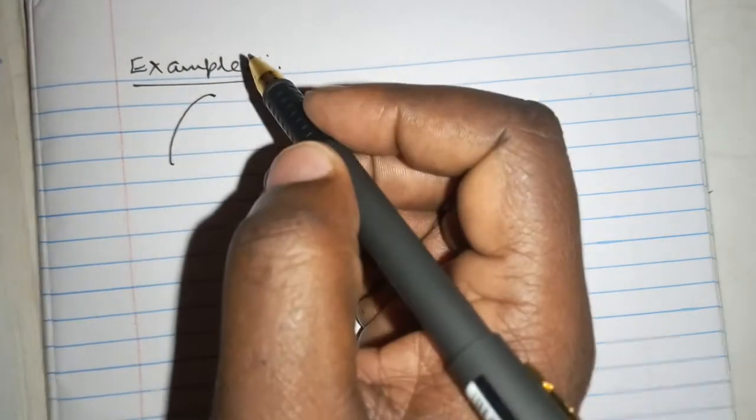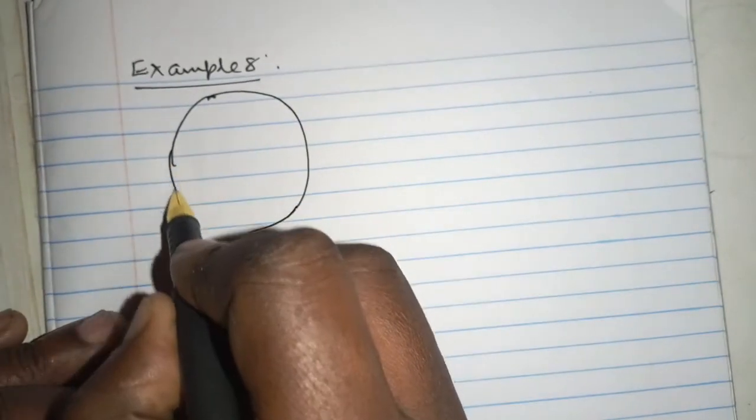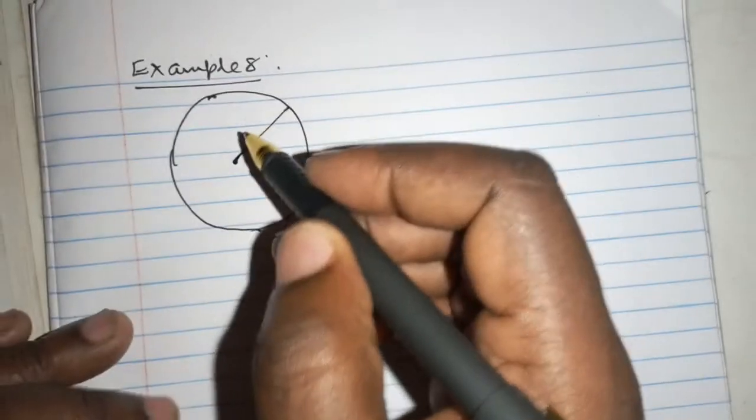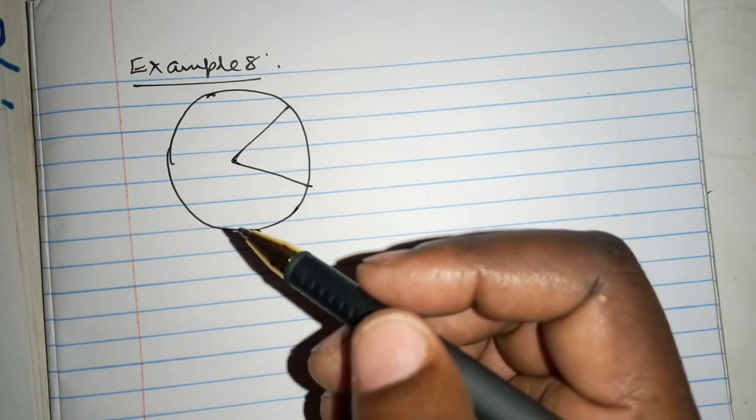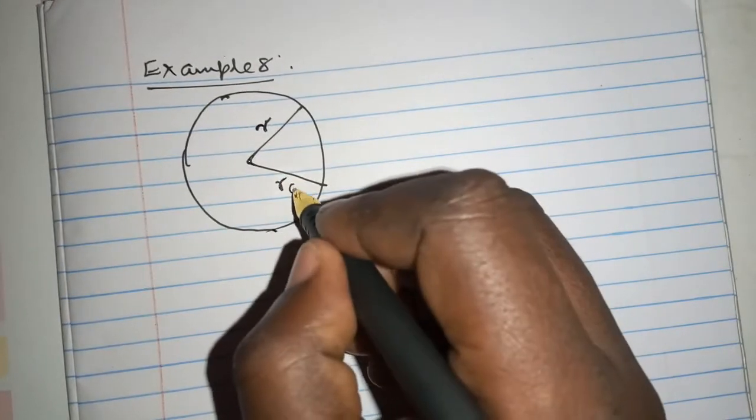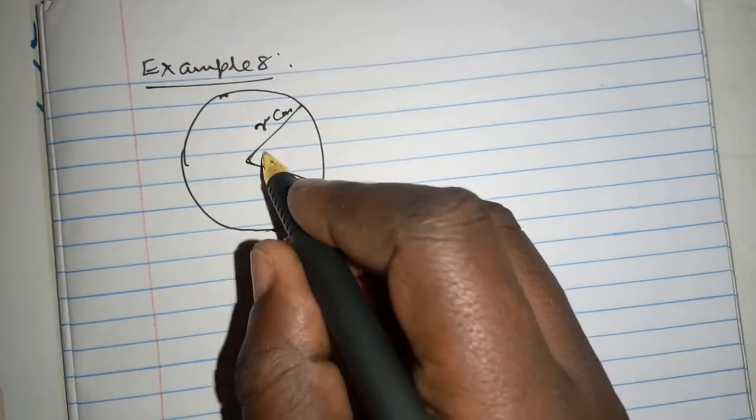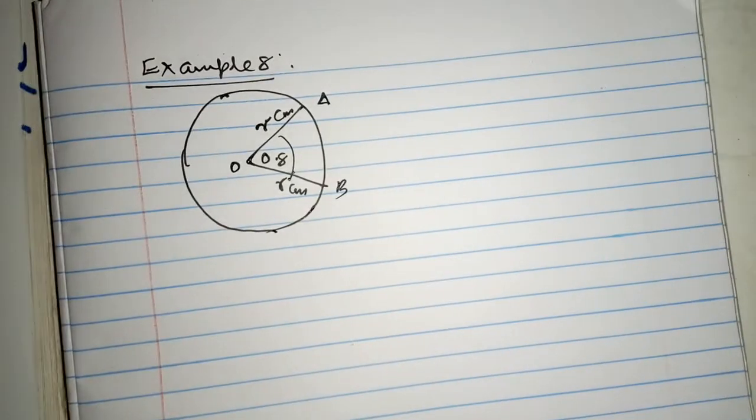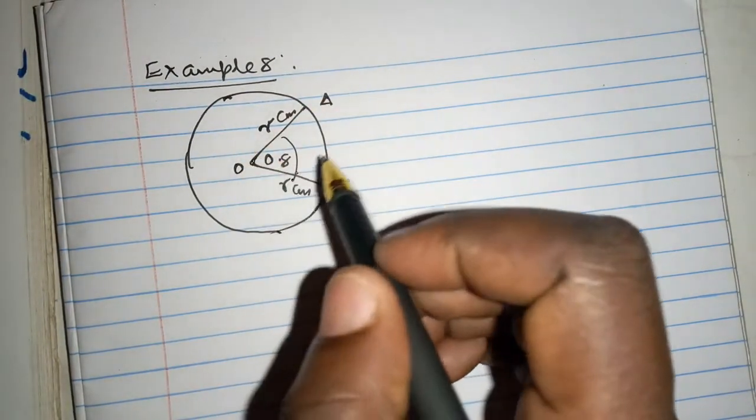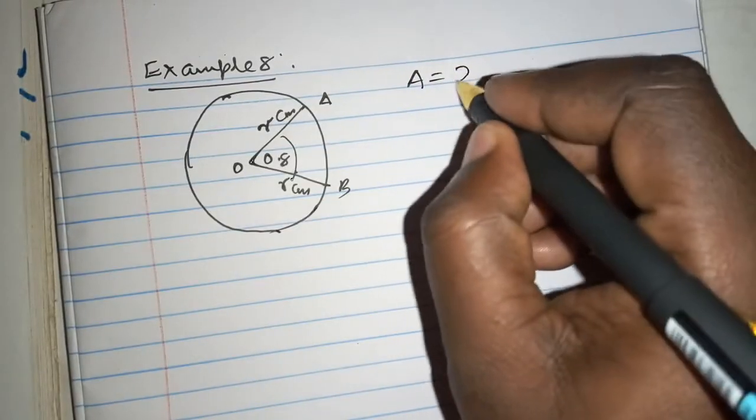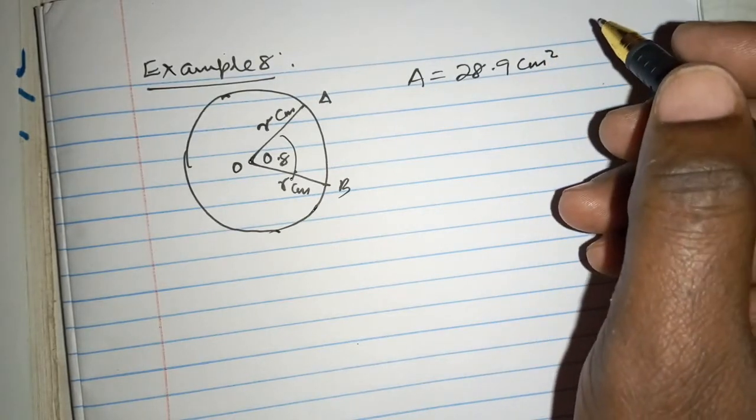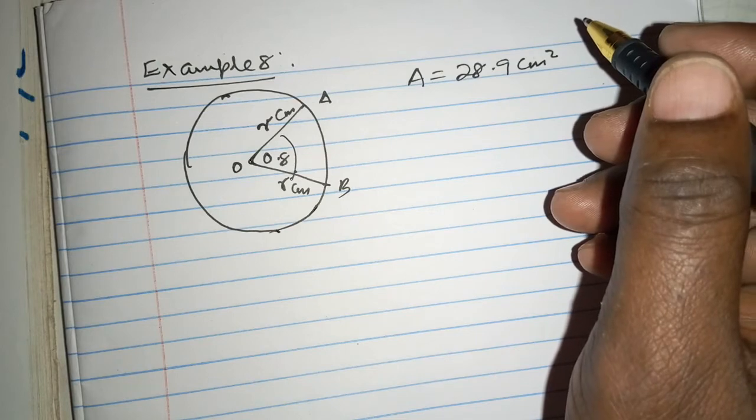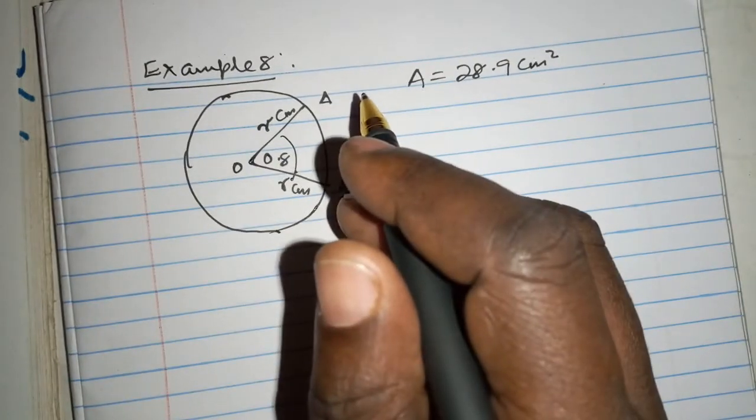In the diagram, the area of the minor sector AOB, let's first of all have the diagram in place. Yes, it's a circle. The area of the minor sector, we have our centimeters there, that is the radius, and we have 0.8 radians at the middle or at the center. This is A and this is B. The area of the sector AOB is 28.9 centimeters squared. Given that angle AOB is 0.8 radians, calculate the radius of the circle.